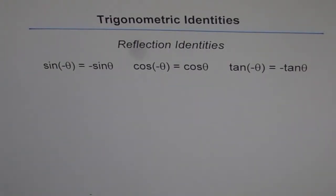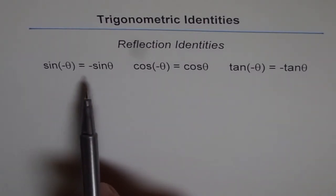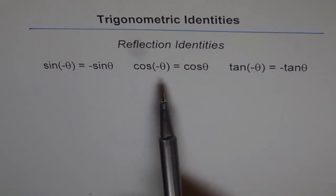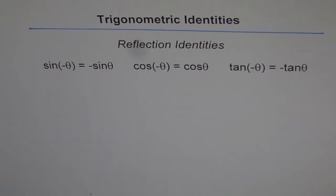Trigonometric identities — reflection identities. In this video I will explain and prove the reflection identities. Sine of minus theta equals minus sine theta, cosine of minus theta is cosine theta, and tan of minus theta is minus tan theta. These are the reflection identities — the fourth set of identities you should know when solving or proving trigonometric identities.